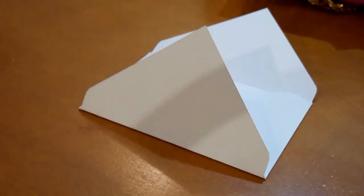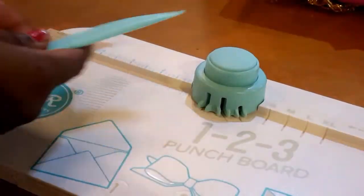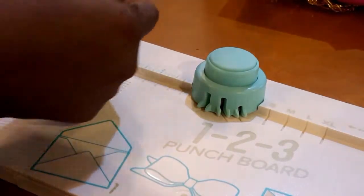So I'm just bringing back in the machine and at the top where you see the blue measurements, that's the paper rounder, so I'm just going to round the two long sides of the envelope.